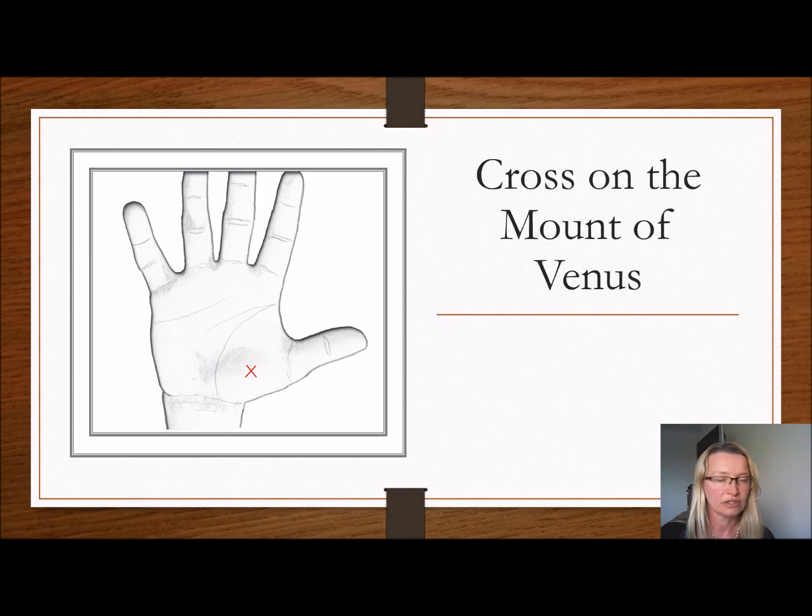Cross on the Venus mount. The Venus represents all about love and family and beauty, things like that. So a cross here shows that the person might not be that happy in love.